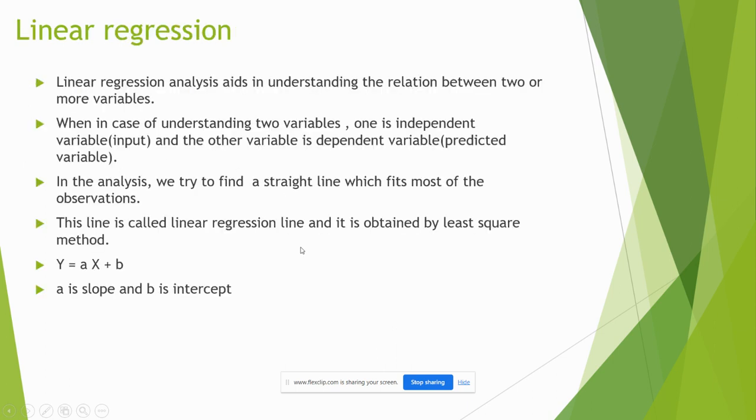Linear regression. Linear regression is a relationship between two or more variables. In this we have to find a straight line which fits most of the observations. That is Y equals AX plus B. A represents slope and B represents intercept. We have to calculate A and B by using given data.